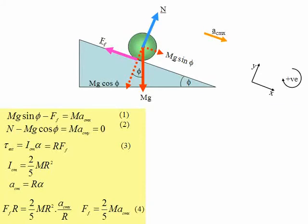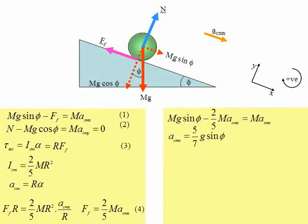We can now substitute into equation 1. We get Mg sine phi minus two-fifths M times a_cm equals M times the acceleration of the center of mass in the x direction. Transposing and simplifying, the acceleration of the center of mass in the x direction equals five-sevenths times g times sine phi. So that's the first part of the question answered.